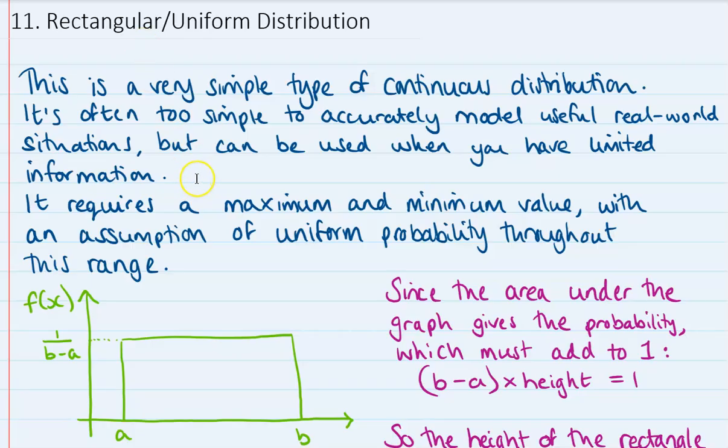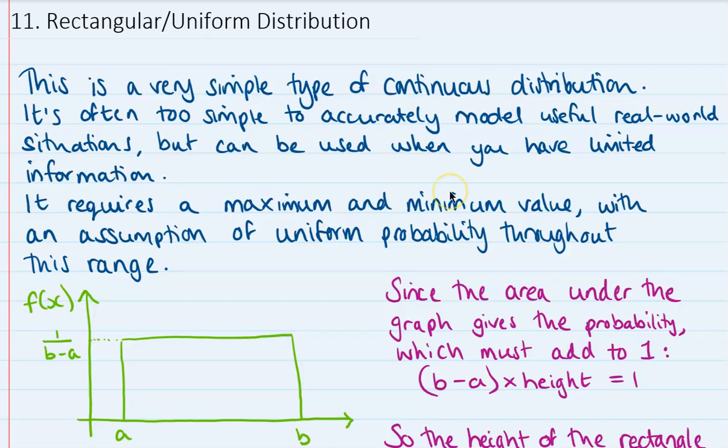But when we've got limited information, it might be something that you can use. So it requires a maximum and a minimum value, and then an assumption that there's uniform probability throughout that range from the minimum up to the maximum.